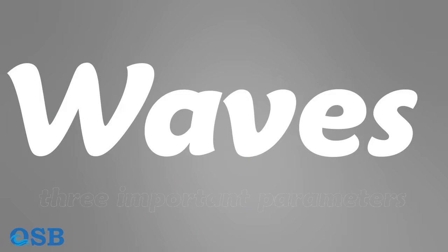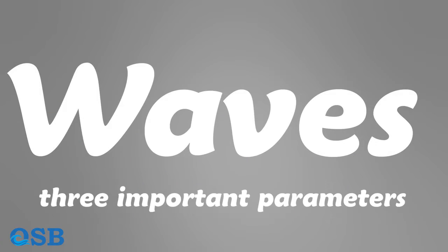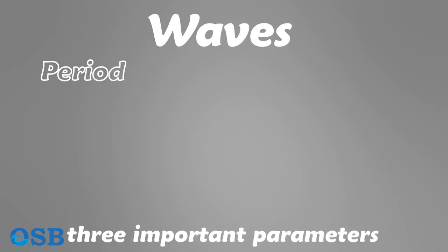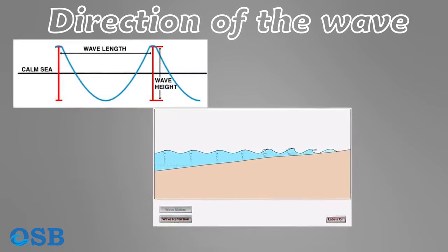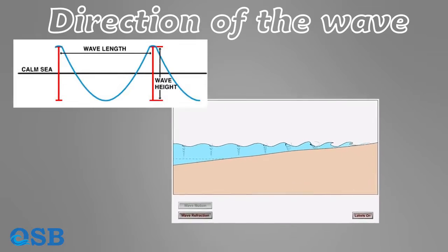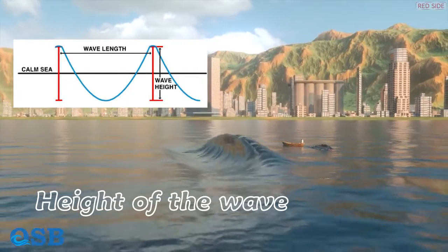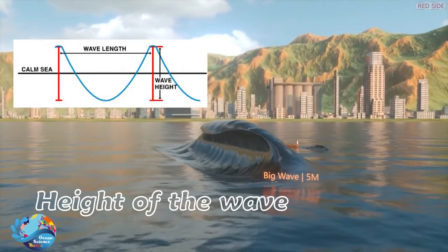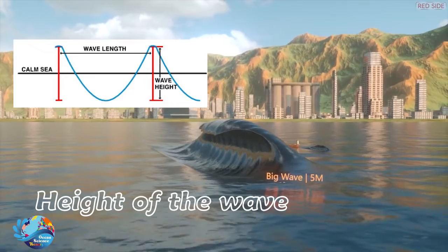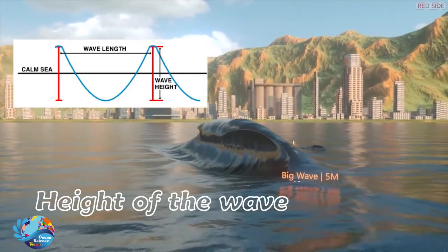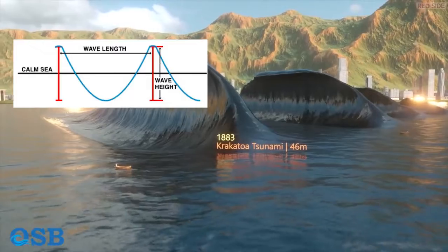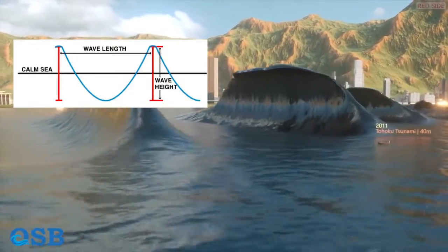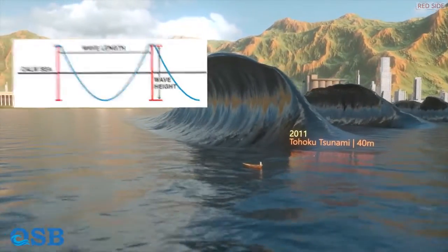When we describe waves using three important parameters, which include the period, direction of the wave, and height of the wave. The direction of the wave shows the direction in which the wave propagates. The height of the wave is expressed in meters and shows how much turbulence or energy the wind has transferred to the sea surface. The period mentions how long we have to wait for the next wave to arrive after one wave passes.